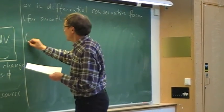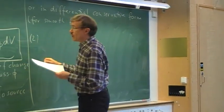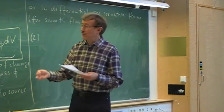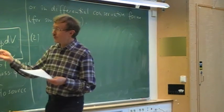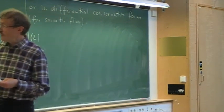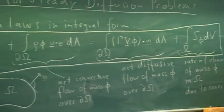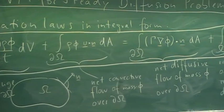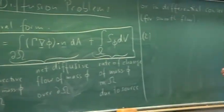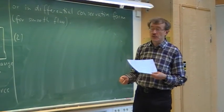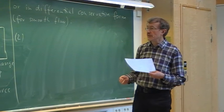The argument is the same as we used before: we apply the Gauss theorem to convert the surface integrals into volume integrals, and we get the divergence of these quantities.